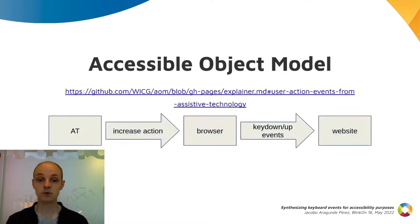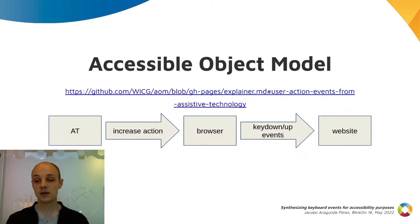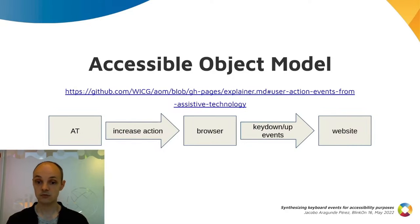The solution proposed in the Accessible Object Model effort to make actions work on those custom widgets is synthesizing the correct events for the website to consume. If the increment action produced the same events as a right key press — key down and up — the website would react to them and increase the slider.